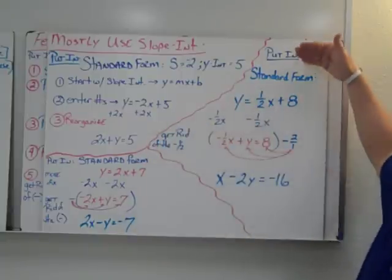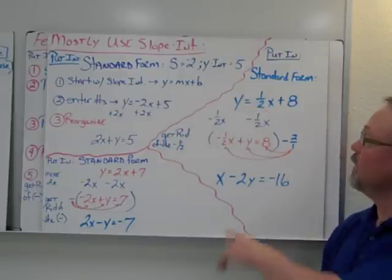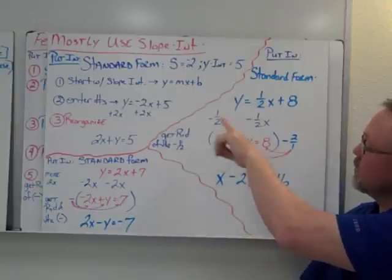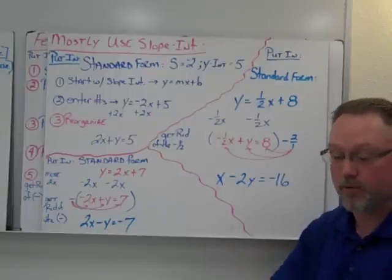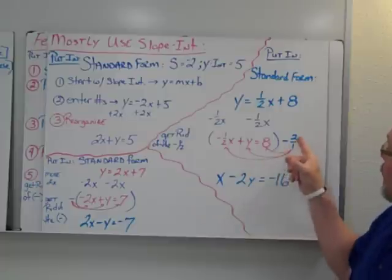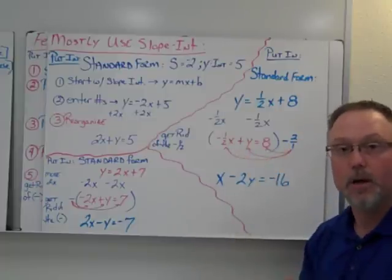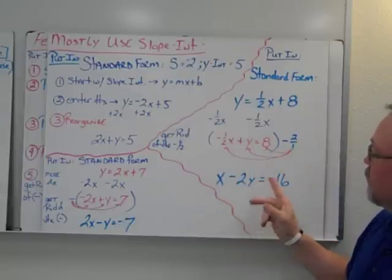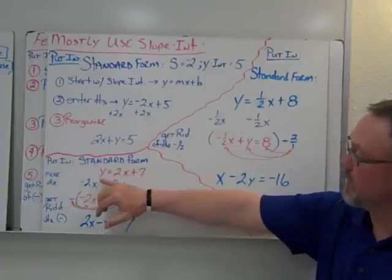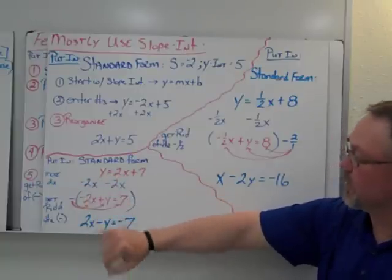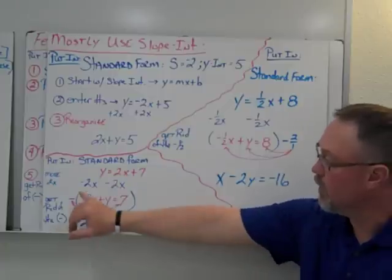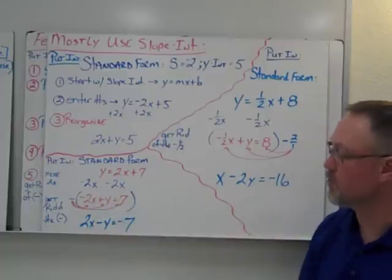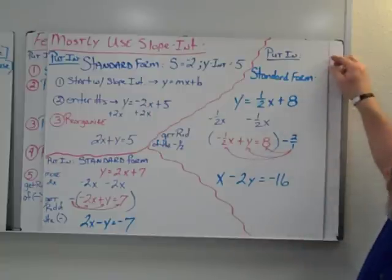Another example: if we're putting y equals 1/2 x plus 8 into standard form, we move the negative 1/2 x over. The problem is we have both a negative and a fraction, so we have to get rid of the negative 1/2 by distributing by its reciprocal or the common denominator. When we multiply through, we end up with positive x minus 2y equals negative 16. For y equals 2x plus 7, we move the 2x over, but end up with a negative coefficient out front, so we distribute a negative throughout, changing it to 2x minus y equals negative 7.